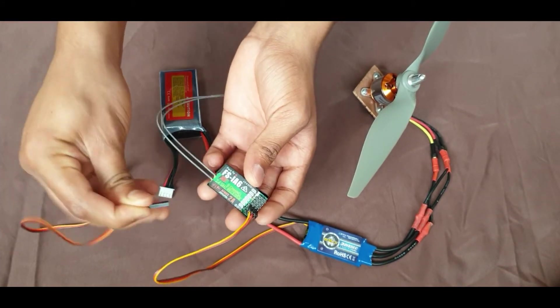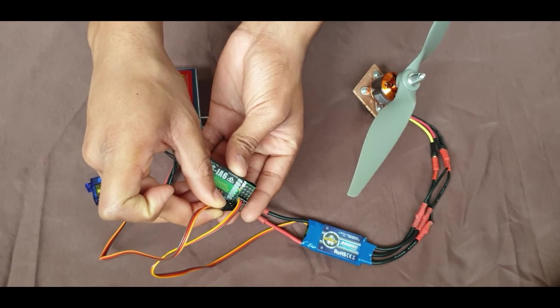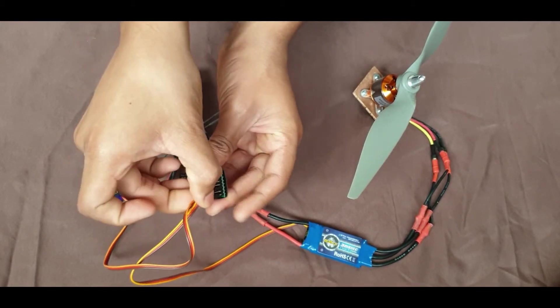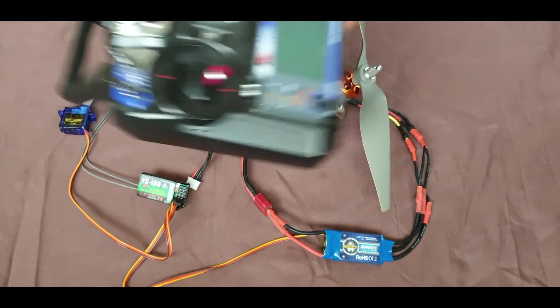Finally it's time for us to connect our servo to the receiver. I'll connect this to channel one. Now with our required components connected to the receiver, we are ready to test them out.